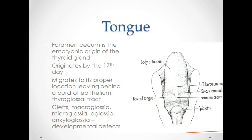The foramen cecum is the embryonic origin of the thyroid gland, originating by the seventeenth day in utero. The thyroid gland migrates to its proper location, leaving behind a cord of epithelium called the thyroglossal tract.